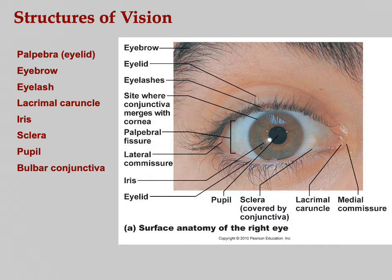For the eye: palpebra is the fancy name for eyelid. The lacrimal caruncle is that little structure in the corner of the eye — that's where you get the little 'eye boogers' in the morning; there's actually a drain back there for your tears. The iris is the colored part of your eye — it's actually a large muscle. The sclera is the white part of the eye.